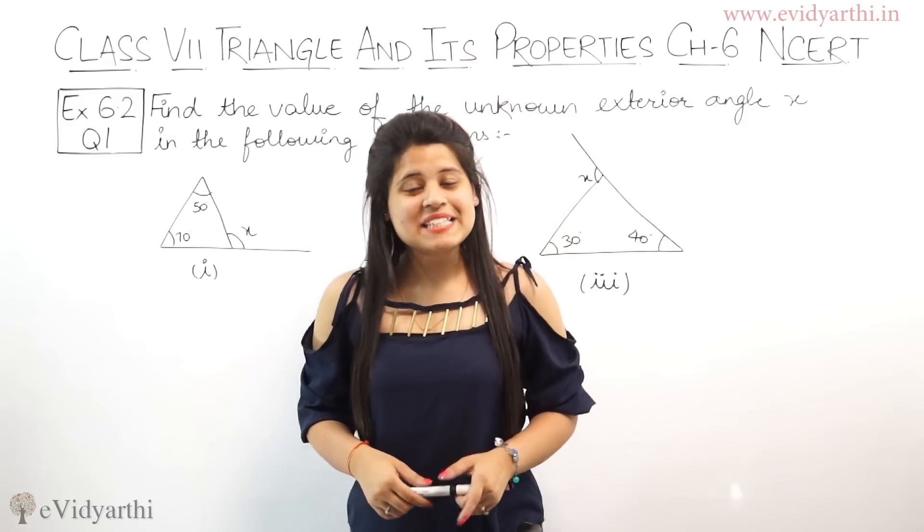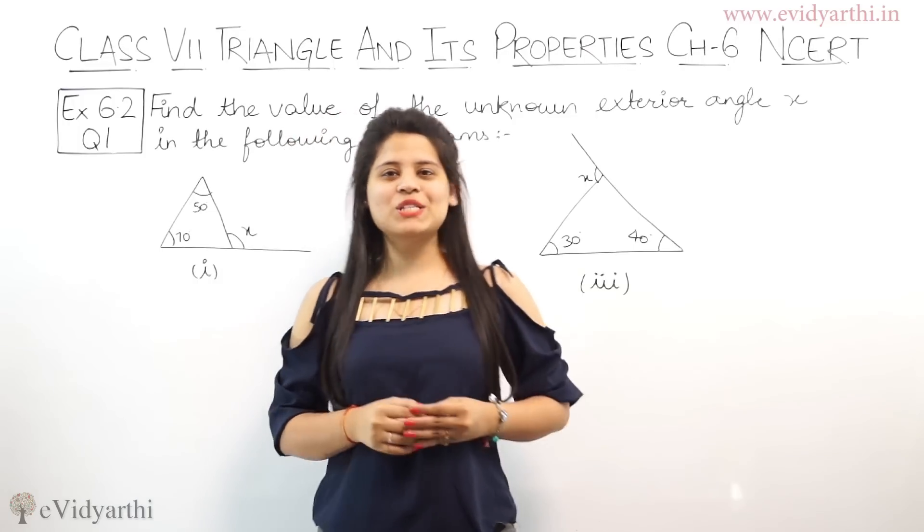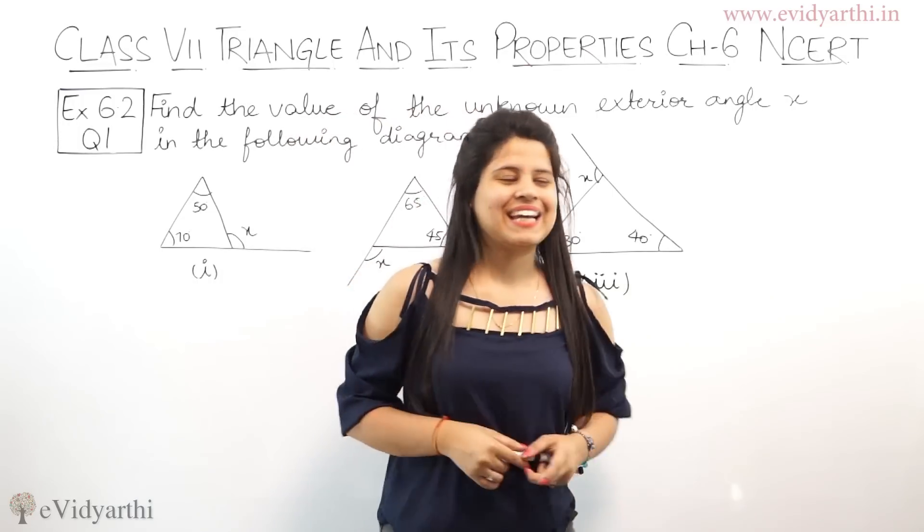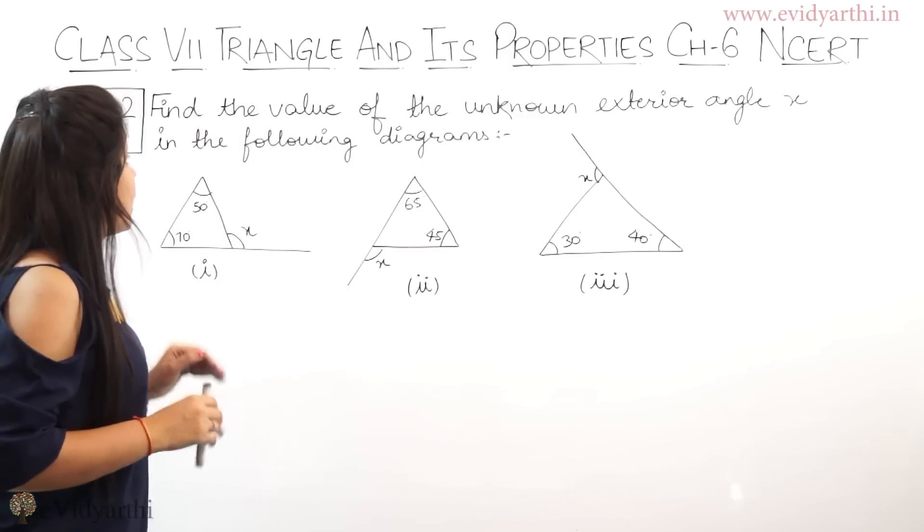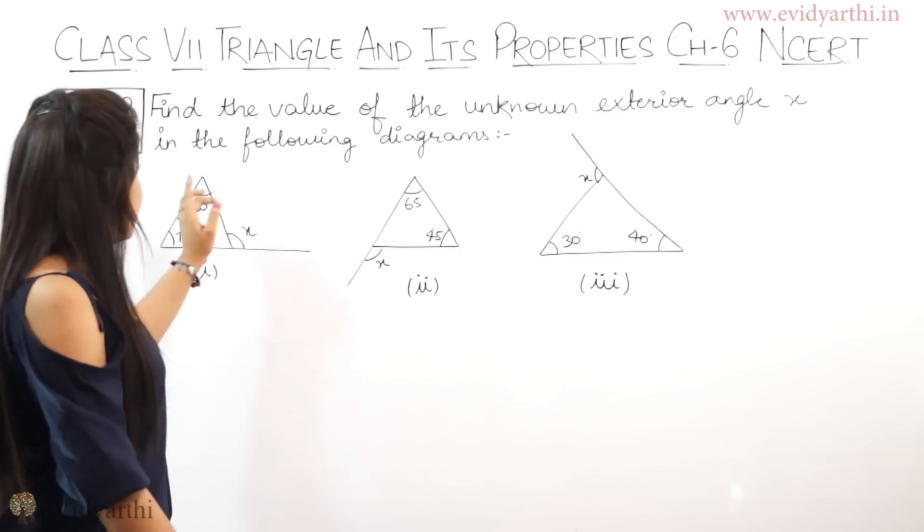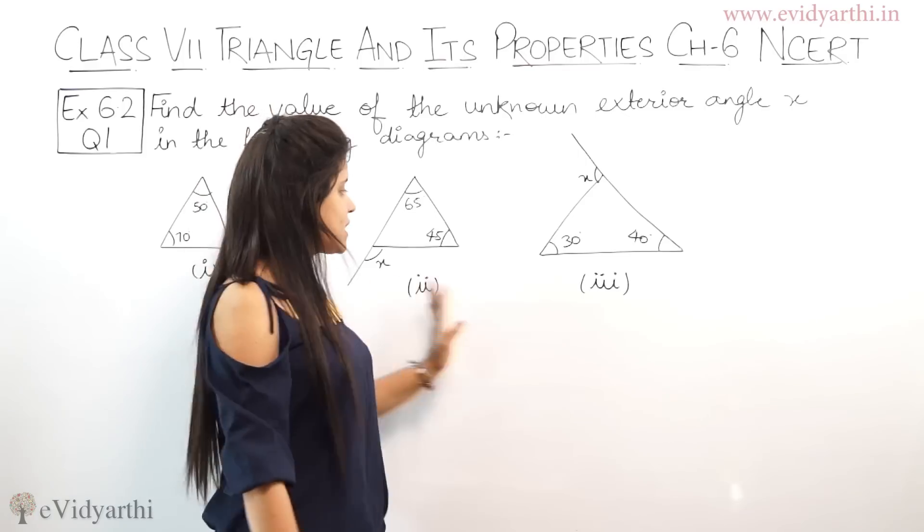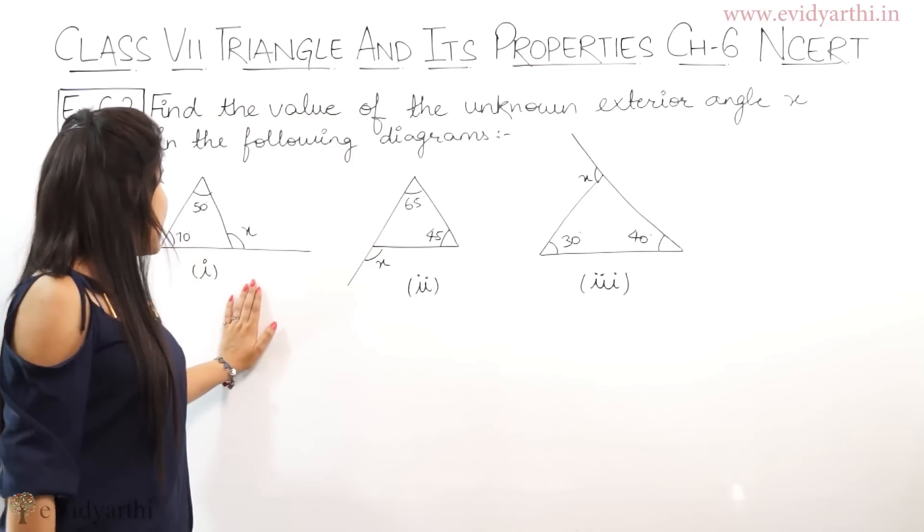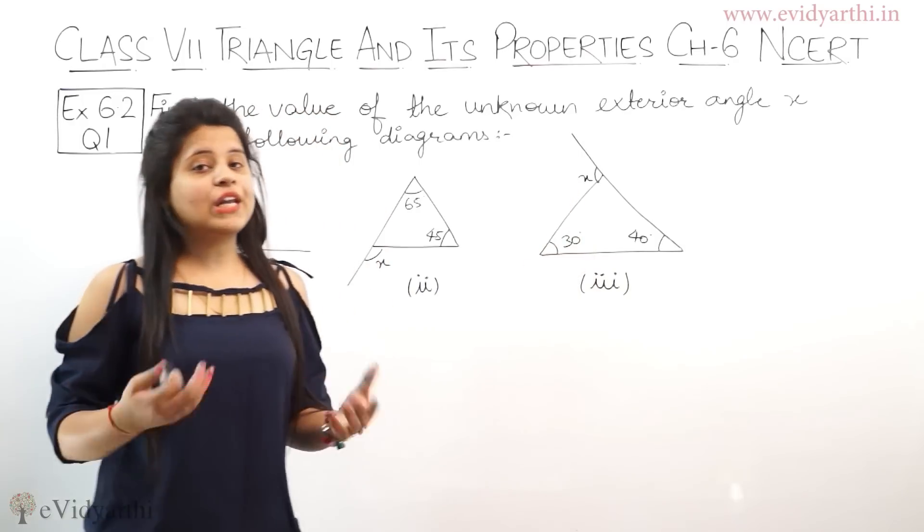Hello everyone, this is Mansi from eVidyarthi towards N and we are starting with Exercise 6.2 Question Number 1. Find the value of the unknown exterior angle X in the following diagram. Here you have total 6, I have just 3 drawn here. Here you have exterior angle X, this value you find. With the exterior angle, you have 2 interior angles given here.